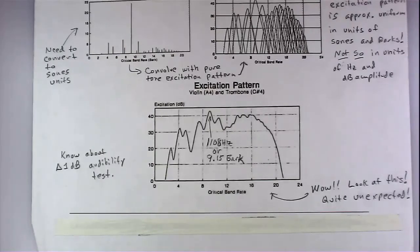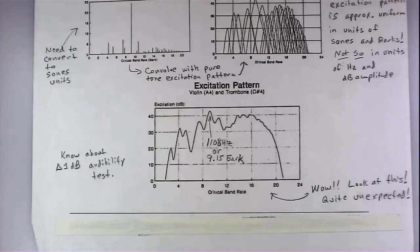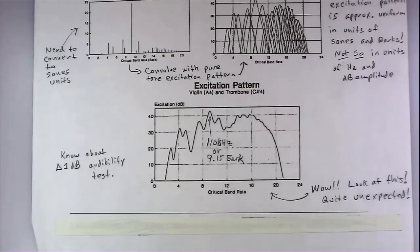The 1 dB audibility test: go through all partials, compute the excitation pattern once with the partial included and once without. If the excitation pattern matches within 1 dB everywhere, you can safely leave that partial out — it's inaudible. This works well; it's conservative sometimes (sounds match even with slightly more than 1 dB difference), but it's a reasonable starting approximation and was far better than the ad hoc techniques we'd used before.